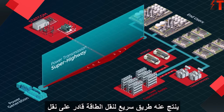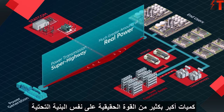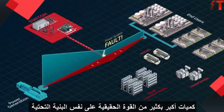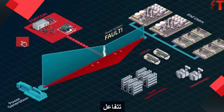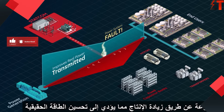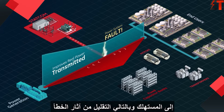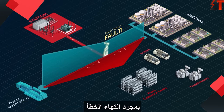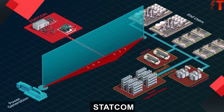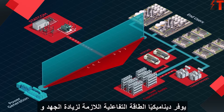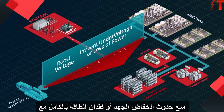This results in a power transmission superhighway capable of transmitting much greater amounts of real power over the same infrastructure. When a disturbance occurs, such as a power system fault, the STATCOM reacts rapidly by increasing output, improving the real power transmitted to the consumer and minimizing the effects of the fault. Once the fault is cleared, load reactive devices simultaneously come back online and cause significant voltage sag. The STATCOM again responds rapidly, dynamically supplying the necessary reactive power to boost voltage and prevent under-voltage conditions or complete loss of power.